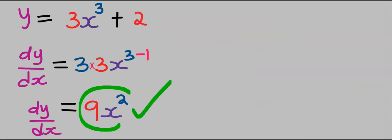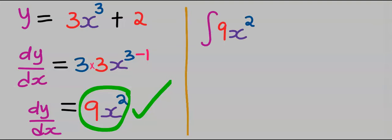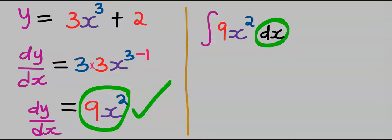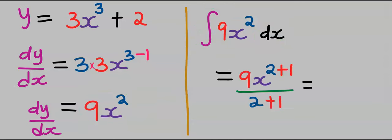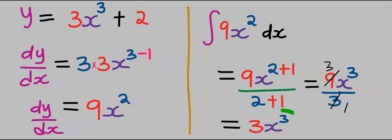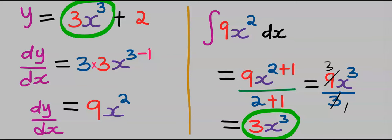Next we are going to apply the integral power rule to this result — that is, we are going to integrate 9x squared with respect to x. When you apply the integral power rule, the result matches our original differentiated function, as you can see.